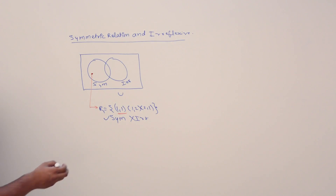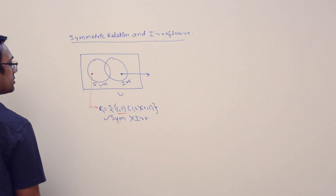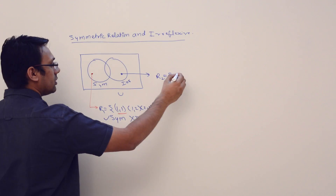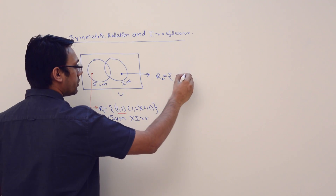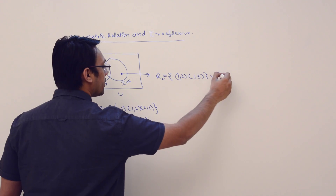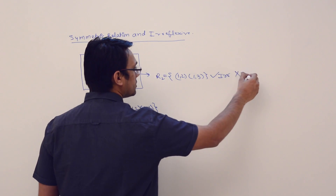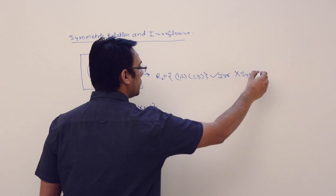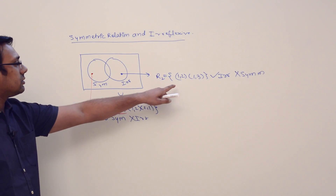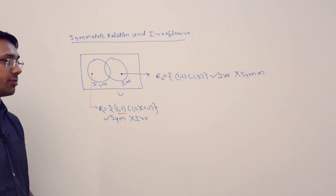Now can I get an example of a relation which is irreflexive but not symmetric? Yes. Consider R2 = {(1,2), (1,3)}. This relation is irreflexive but it is not symmetric. Why is it not symmetric? Because it does not contain the pairs (2,1) and (3,1).